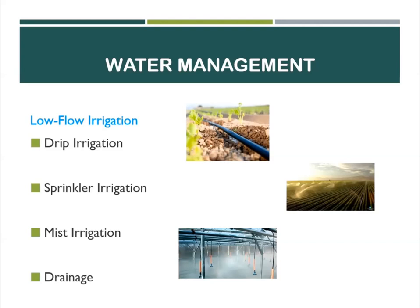Second is sprinkler irrigation, where water is sprayed through the air from pressurized nozzles and falls like rain on the crop. And lastly is mist irrigation, where small droplets of water are suspended in the air, thus lessening runoff.